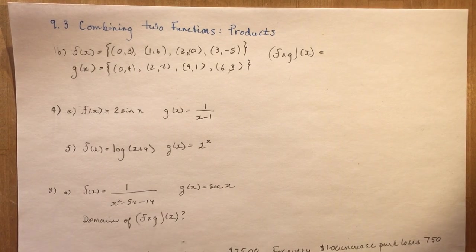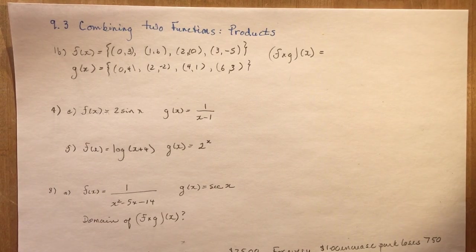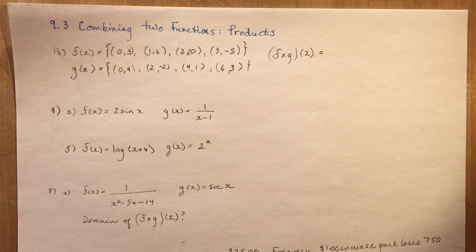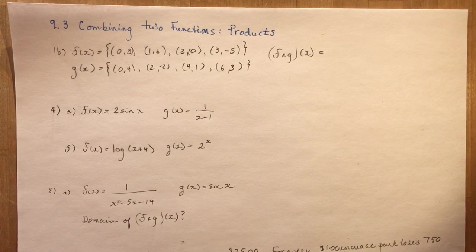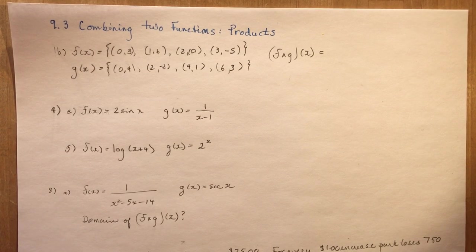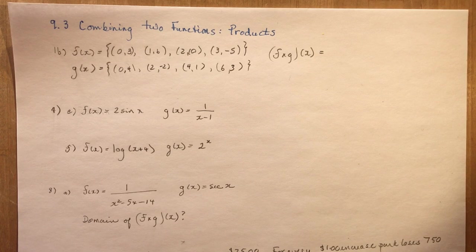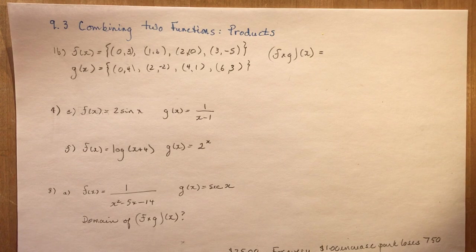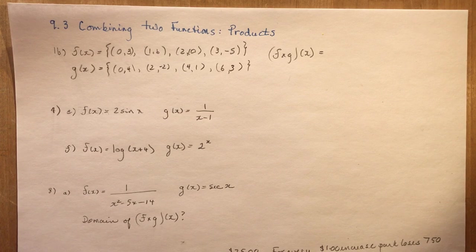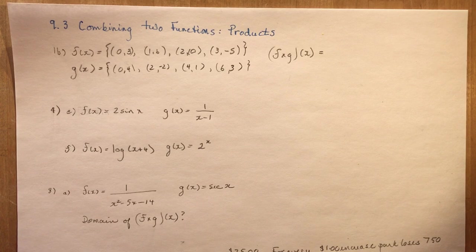9.3 is combining two functions by using products. So you know what a product is, product just means you're going to multiply. The same rules apply as addition and subtraction when it comes to domain. Remember for your domain you need to find out what the restrictions are on each of the functions and then you find out where they intersect. In other words the functions have to be using the same domains in order for you to multiply them.